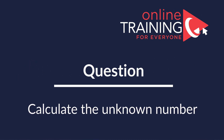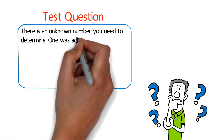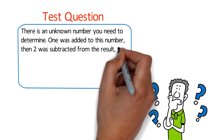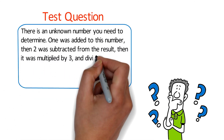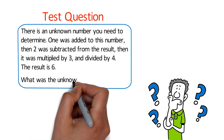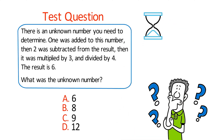Here is a cool, simple question which is frequently used to test mental math capabilities. There is an unknown number. One was added to it, then two was subtracted from the result, then it was multiplied by three, then divided by four. The result is six. What is the unknown number? The four choices are: A) 6, B) 8, C) 9, and D) 12.